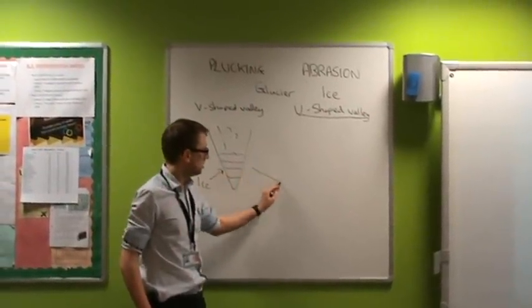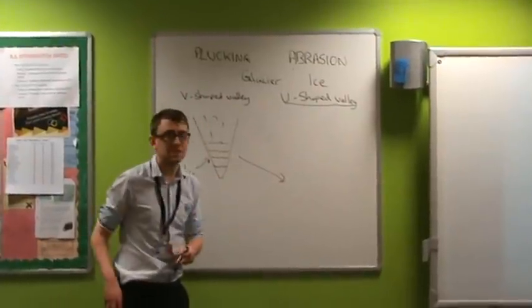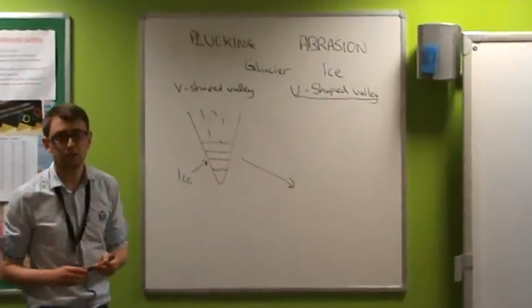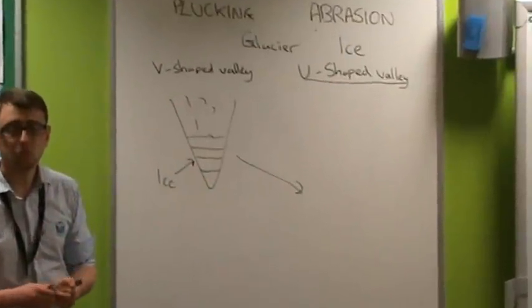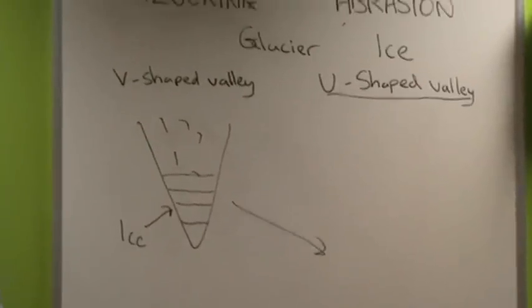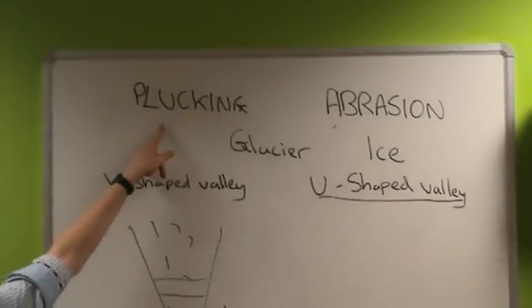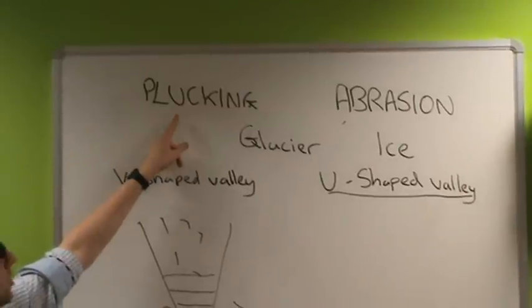Over time, this glacier will start to move down a valley. As it moves down this valley, some processes of erosion happen.